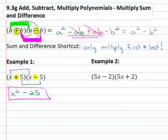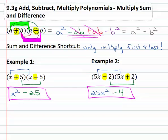Looking at example two again we notice we have the exact same terms, five x minus two, five x plus two. The only difference is one's minus, one's plus. We have a sum and difference again. So again with sum and difference we only have to multiply the first two, five x times five x is twenty-five x squared. And the last two, negative two times two is negative four and we'll have our final solution twenty-five x squared minus four.